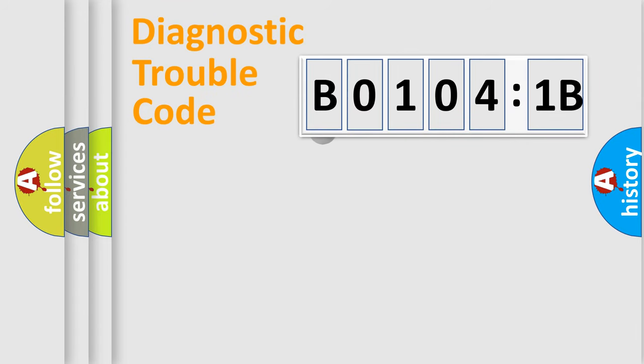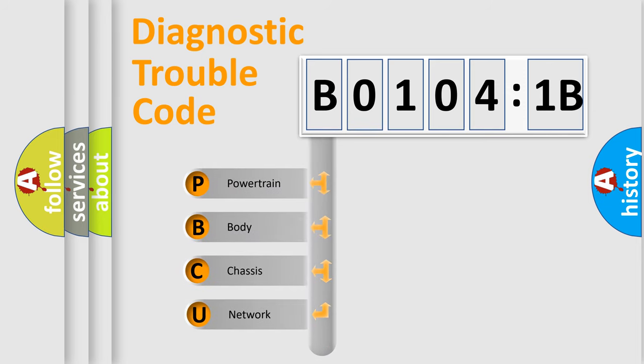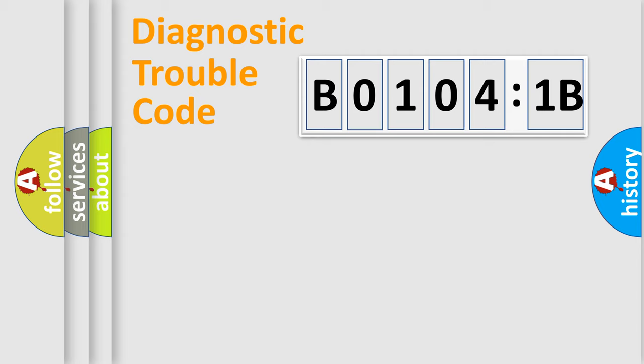First, let's look at the history of diagnostic fault code composition according to the OBD2 protocol, which is unified for all automakers since 2000. We divide the electric system of an automobile into four basic units: Powertrain, Body, Chassis, and Network.